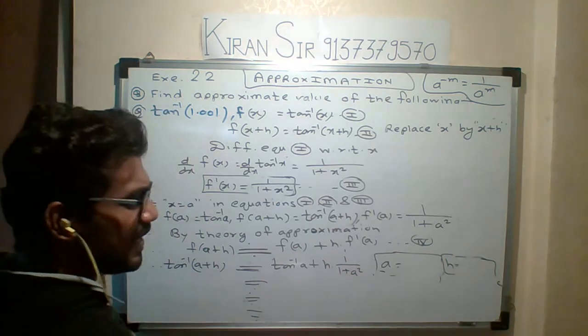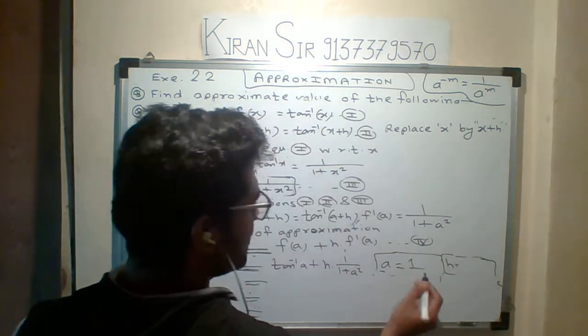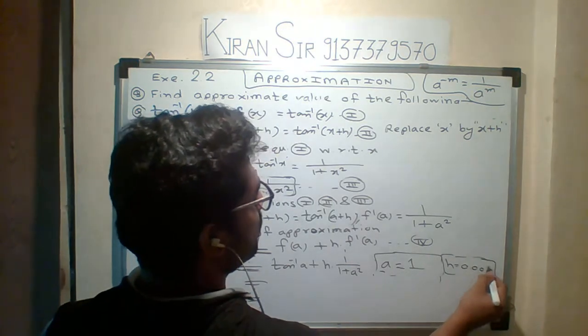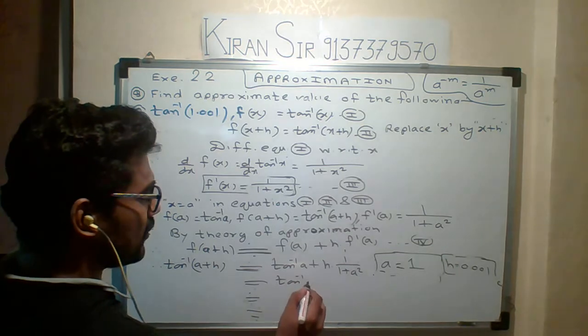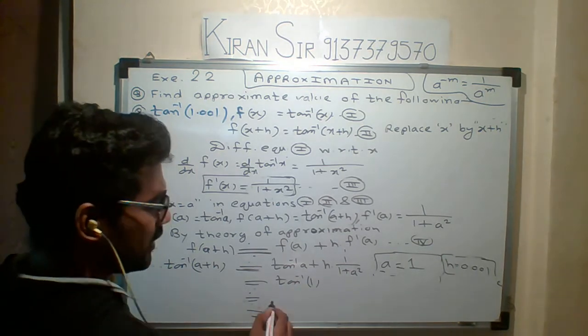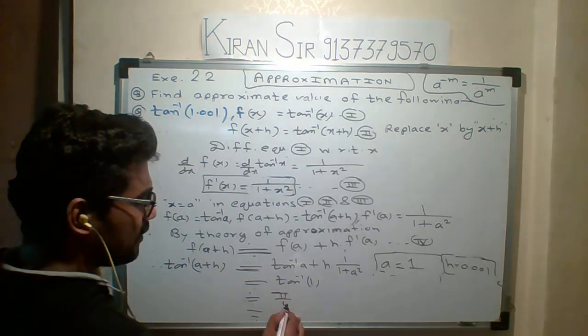Now we have to decide A. It's very easy. A is 1 and H is 0.001. Because why have we taken 1? Tan inverse of 1 is 45 degrees. 45 degrees means pi by 4.